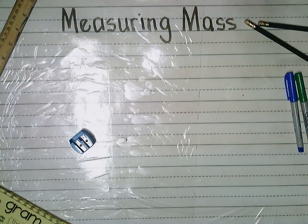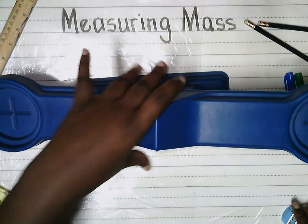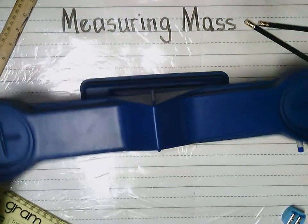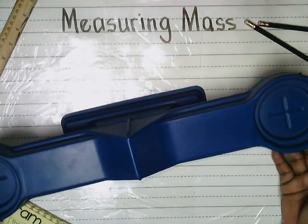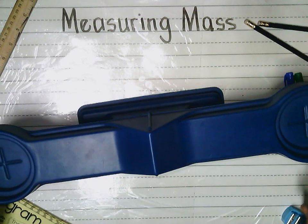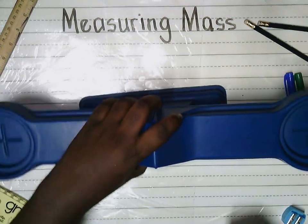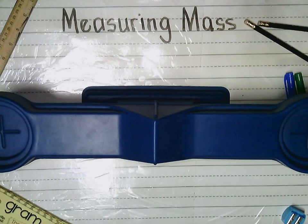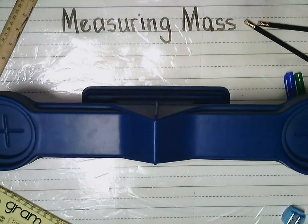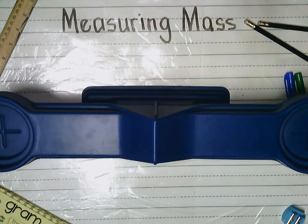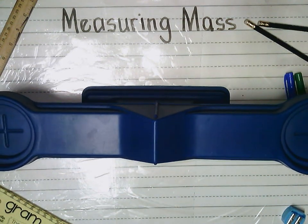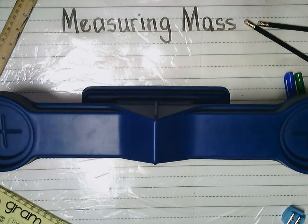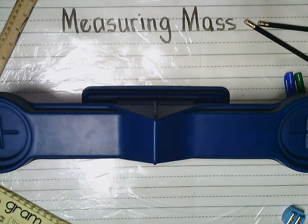Now I'm going to show you some of the instruments. If you look here, this is a scale — it's a balance. This is one of the things that we are going to be using. Two objects could be the same size but have different weight or mass.